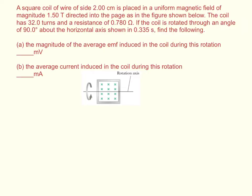find the following: A, the magnitude of the average EMF induced in the coil during this rotation, and B, the average current induced in the coil during this rotation.